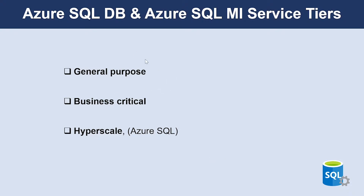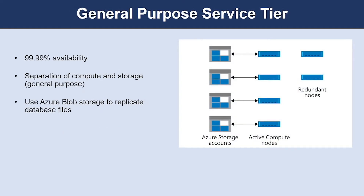General Purpose is designed for budget-oriented workloads. Business Critical is designed for low-latency workloads with high resiliency to failures and fast failovers. Hyperscale, which is only available for Azure SQL Database, is designed for most business workloads providing highly scalable storage, read scale-out, and fast database restore capabilities.